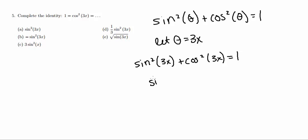So doing that, I'm going to get sine squared of 3x is equal to 1 minus cosine squared of 3x.